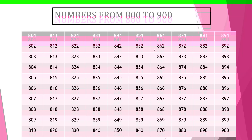Let's begin. You can count the numbers from 851 to 860. Let's count: 851, 852, 853, 854, 855, 856, 857, 858, 859, 860.